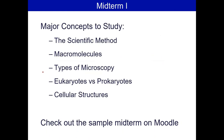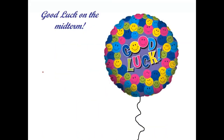Here are the major concepts covered: cellular structures both prokaryotic and eukaryotic, comparison of those two cell types, microscopy, macromolecules, and the scientific method. There's also a sample midterm on Moodle from a few years ago — similar in format to what I use for paper exams, so check that out for an idea of question styles. Sorry for going a couple of minutes over time. All of Friday will be a review session for the midterm. Try the Lockdown Browser practice quiz and let me know if you have any issues. Have a great afternoon!